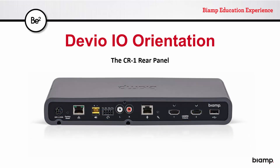The rear panel includes the following from left to right: the jack for the supplied 24-volt DC power supply, the pinhole factory reset button, a network port for monitoring and management of Devio, a 20-watt powered audio output intended for connection to a passive loudspeaker, a telephone interface connection, an RCA line level output intended for connection to an amplifier or powered loudspeaker, the microphone jack for connection to your Devio microphone, another pinhole button for initiating the auto setup process, a pair of HDMI outputs for connection to external video displays, and a fourth USB connection.